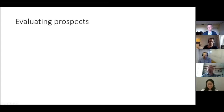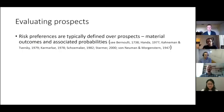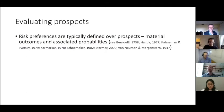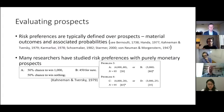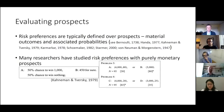Let's think about evaluating prospects from the perspective of most theories and models of decision under risk. Typically in these theories, risk preferences are defined over prospects — the material outcomes and associated probabilities that you can realize. In other words, people's preferences are completely defined over what you stand to gain or lose materially and the probabilities of those gains and losses. Many researchers have studied risk preferences with purely monetary prospects, having people choose between distributions of gains or distributions of losses.